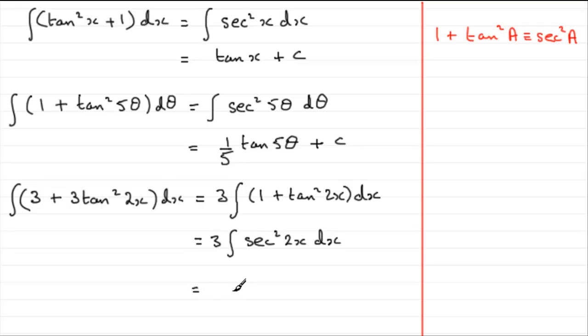So what is that integral? Well, the 3 is going to stay the same. Integrating sec squared 2x, well, it's going to be basically a tan 2x. But this, if differentiated, would give us 2 sec squared 2x. So we need to times it by a half. So we've got 3 times a half tan 2x, plus a constant of integration.